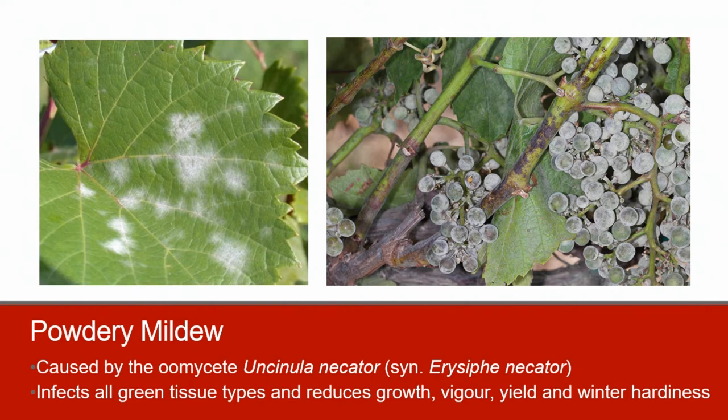White powdery mildew growth appears on the upper or lower side of the leaves. The colonies enlarge, coalesce, and cover the entire surface of affected leaves. Severely diseased leaves can curl upwards and shrivel during dry, hot weather. Infected cluster stems may wither and dry up, resulting in berry drop.